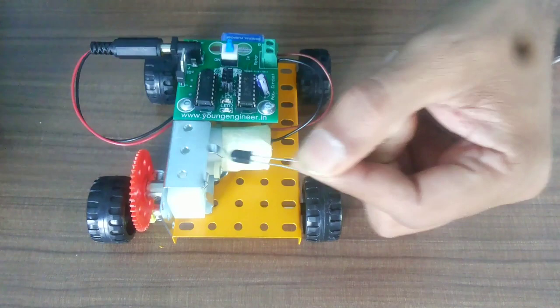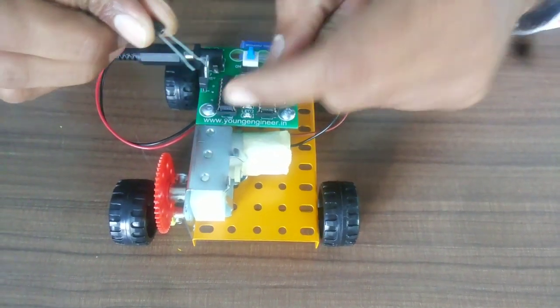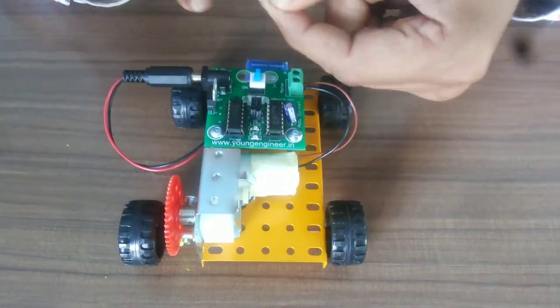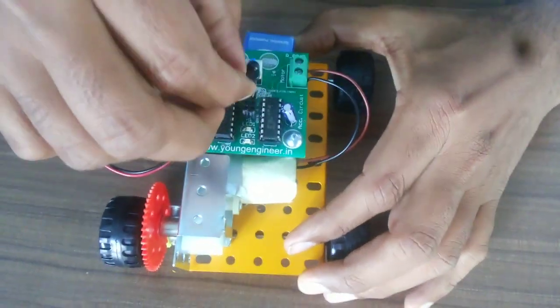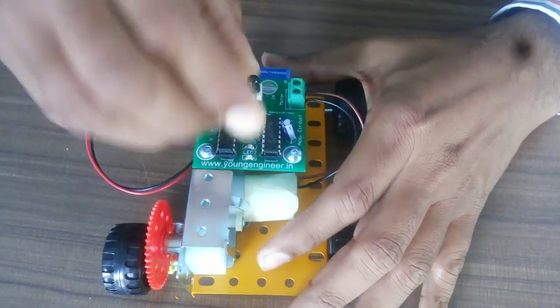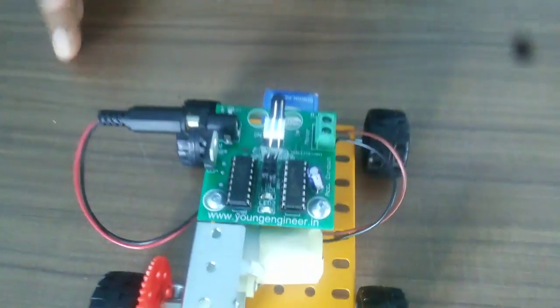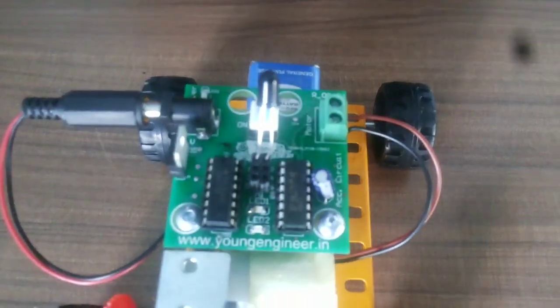Now, next what we need to do is we need to put this IR sensor - negative terminal of the IR sensor in socket number 1 and positive of IR sensor in socket number 2 like this. Just bend it towards from which side you are operating with a sensor like this.